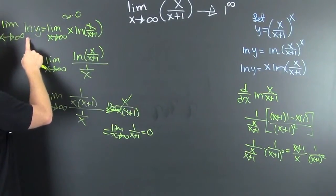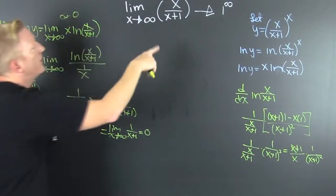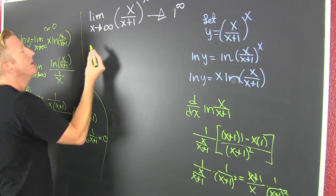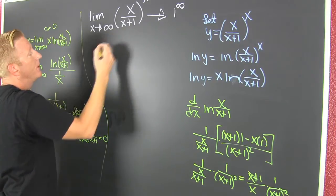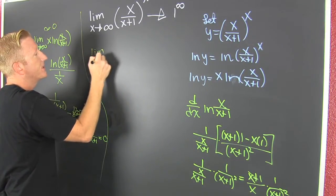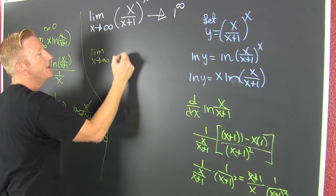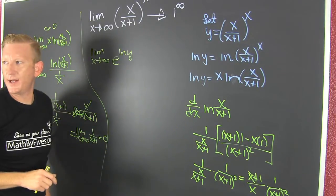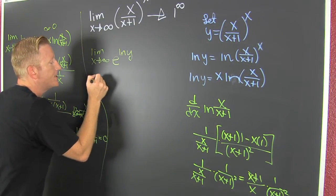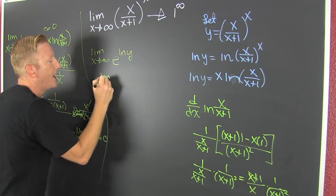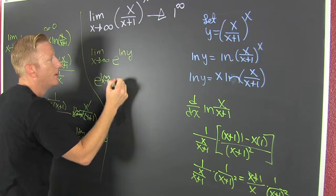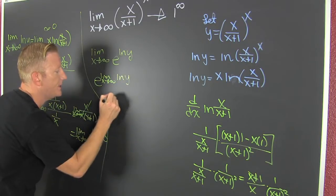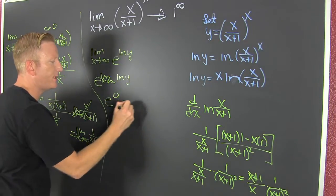That's the limit of the natural log of Y as X goes to infinity. So now this is the limit of Y. We're looking at the limit as X goes to infinity of E to the natural log of Y. So then that's E to the limit as X goes to infinity of the natural log of Y. But what was that? It was zero — so that's E to the zero, which is one.